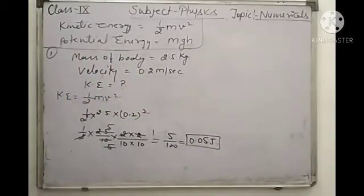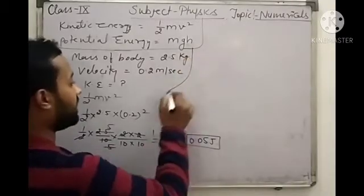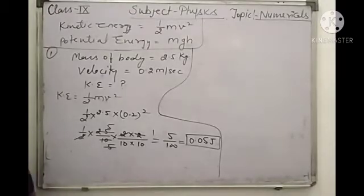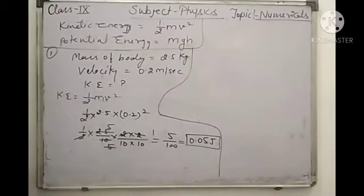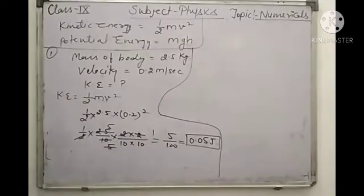This is the value of kinetic energy possessed by this body. The body's kinetic energy is 0.05 Joule — this is our answer. In the question, we were given mass and velocity. We put in the values and found the kinetic energy. Clear?